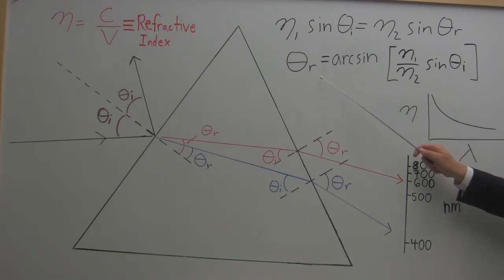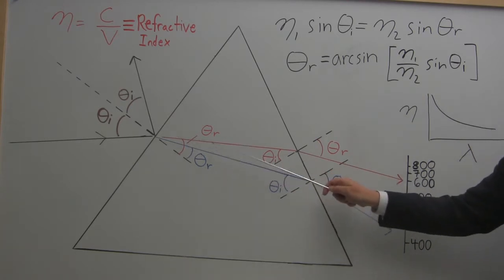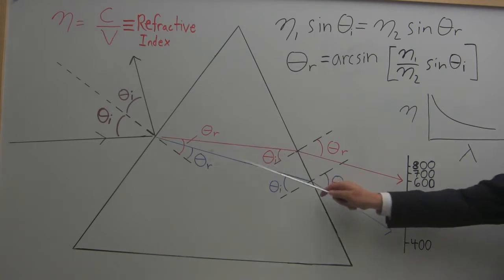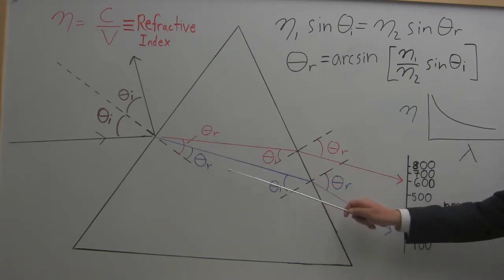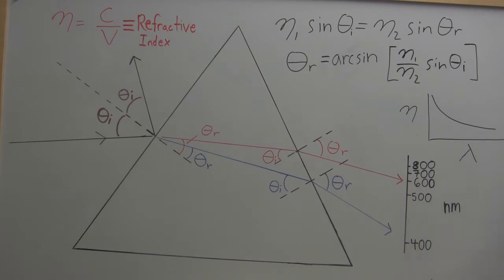We can then solve for the refractive angle and see how light will change its angle relative to the surface normal as it travels into that new interface. Additionally, the index of refraction changes as a function of wavelength. This means that my red light and my blue light will have different angles. As my light enters the glass prism, it's going to be separated into different colors as a function of space.